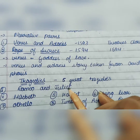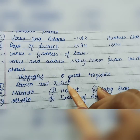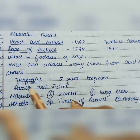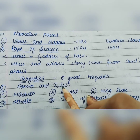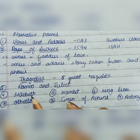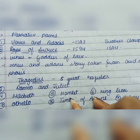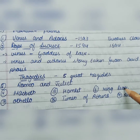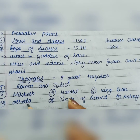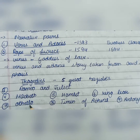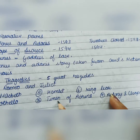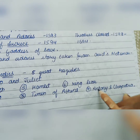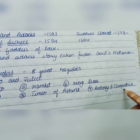Now, the important tragedies of William Shakespeare: a tragedy has a sad ending. The tragedies include Romeo and Juliet, Macbeth, Hamlet, King Lear, Othello, Timon of Athens, and Antony and Cleopatra.